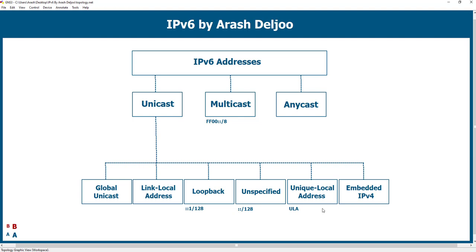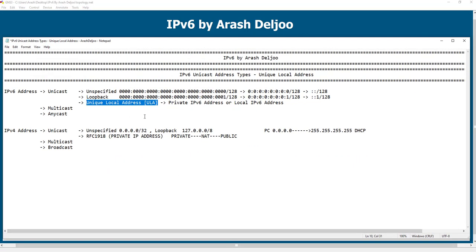I'll talk about Unique Local Addresses more in future videos, but for now I want to show you the format and how to write a Unique Local Address. The ULA range is FC00::/7. This means that every IP address whose first seven bits match this range is a Unique Local Address. FC in hex is: F = 1111, C = 1100, then 0000 — converting hexadecimal to binary.